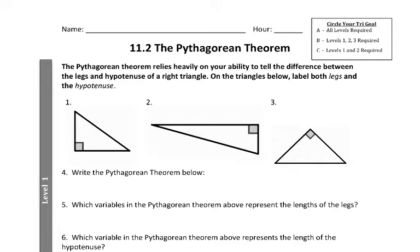Hey everybody, Mr. Murrell here. We're going to talk about homework assignment 11.2, which is about the Pythagorean theorem. I like this worksheet a lot. And I'm really glad that we talked about area in the video before, because if you're watching this video, it means that you're probably struggling with this homework. I want to use what I talked about in my classes about the Pythagorean theorem using this idea about area to understand better the length of a side. It's cool how these things start to tie together. So let's start with the beginning.